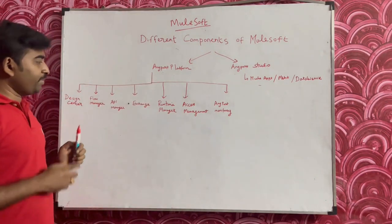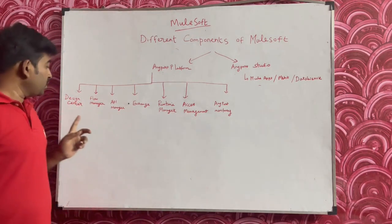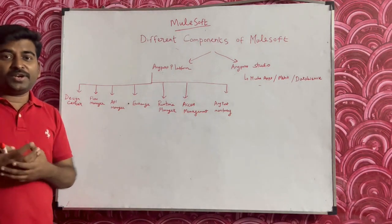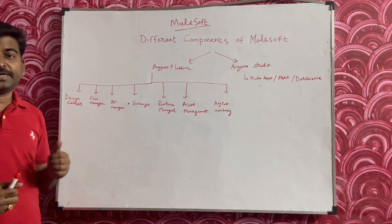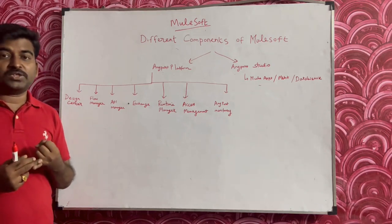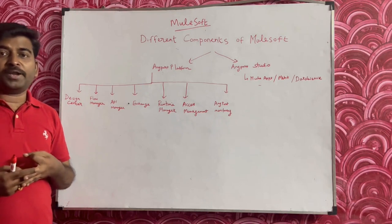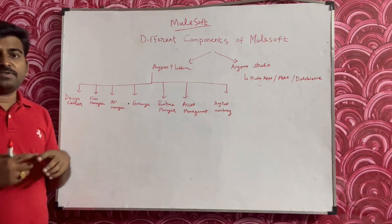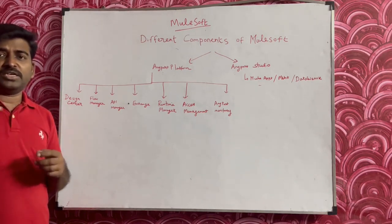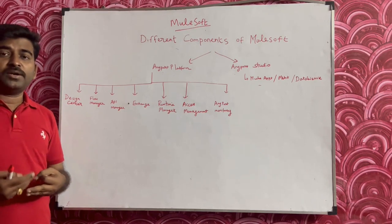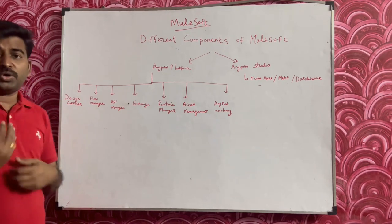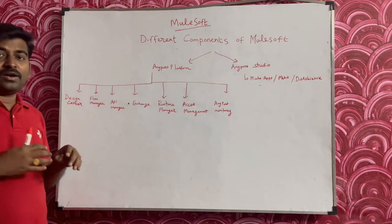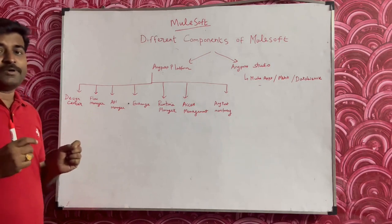Within Anypoint Platform, one key component is Design Center. Design Center is used to design your API specification — it could be a RAML or OpenAPI specification. It has a wizard-based development approach where you can easily choose what methods you need and set examples. If you are comfortable with RAML coding, you can also type your RAML code directly to build the API specification.